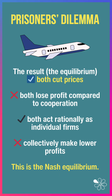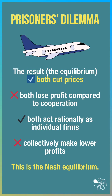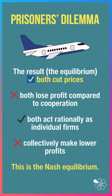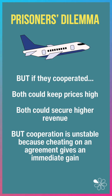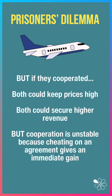As a result, the equilibrium is that they both keep prices low, but lose profit compared to cooperation. Indeed, collectively, they make lower profits. This is the Nash equilibrium. But if they cooperated, both could keep prices high, securing higher revenues and higher profitability. However, cooperation is unstable because cheating on an agreement gives an immediate gain.